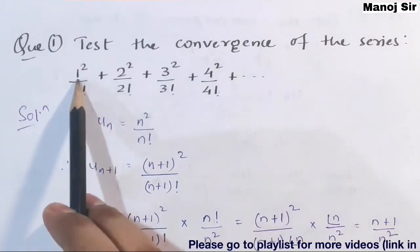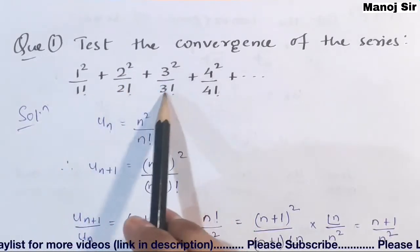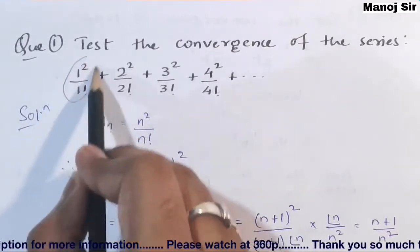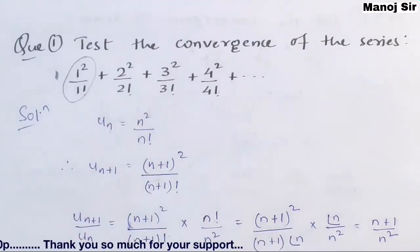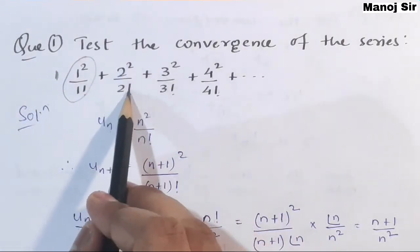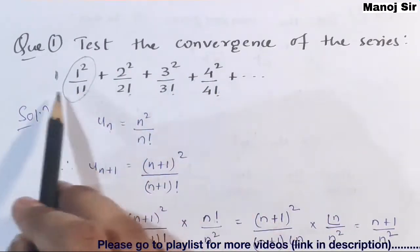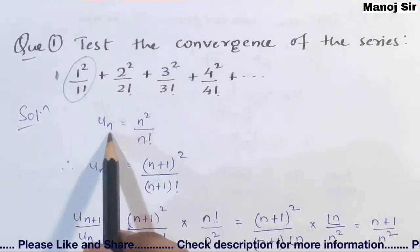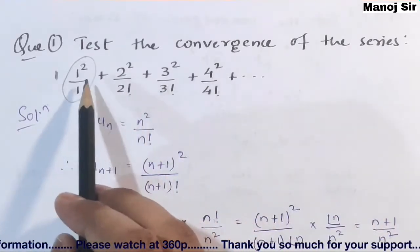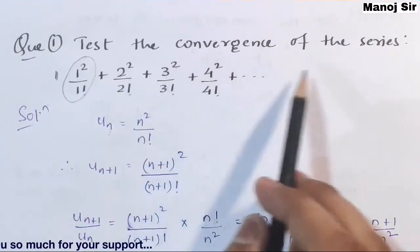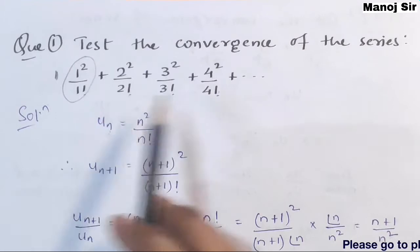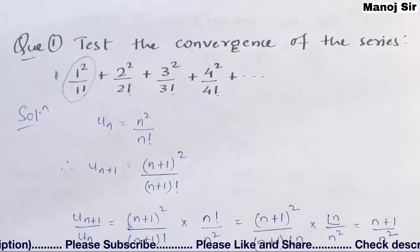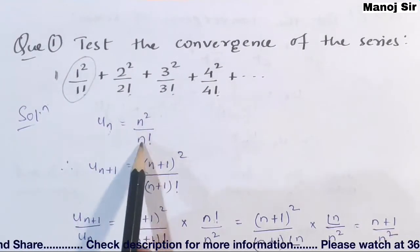Let us start with question number one. The question says: test the convergence of the series 1²/1! + 2²/2! + 3²/3! + 4²/4! + ... Note that 1²/1! = 1, so some textbooks write this starting with simply 1. Now, what is the nth term UN? The series goes 1², 2², 3², 4², so the numerator is n². The denominator goes 1!, 2!, 3!, 4!, so it is n!. Therefore UN = n²/n!.